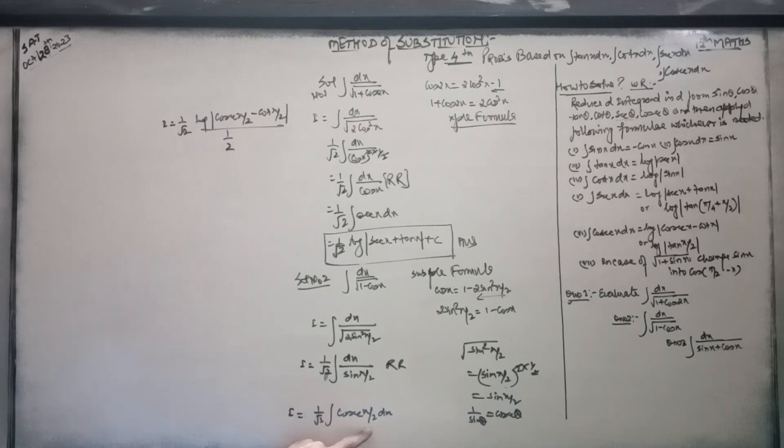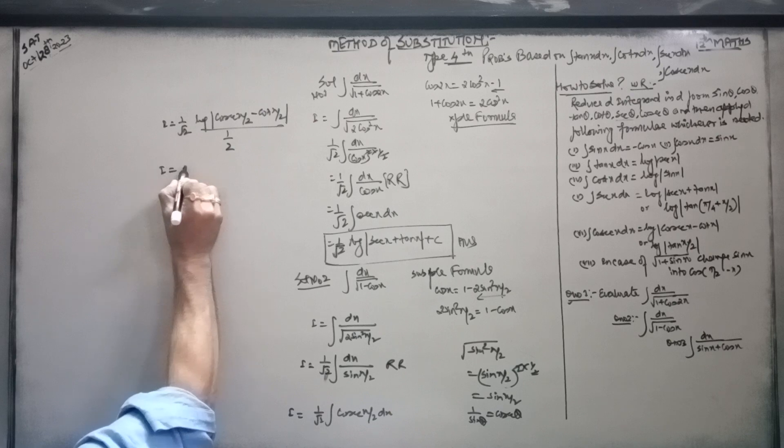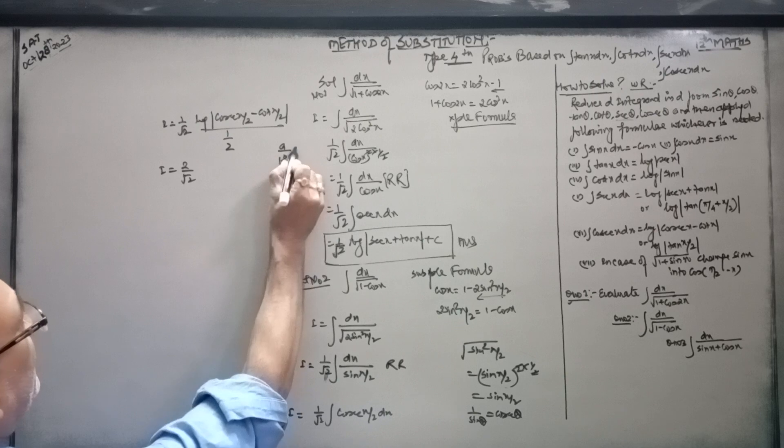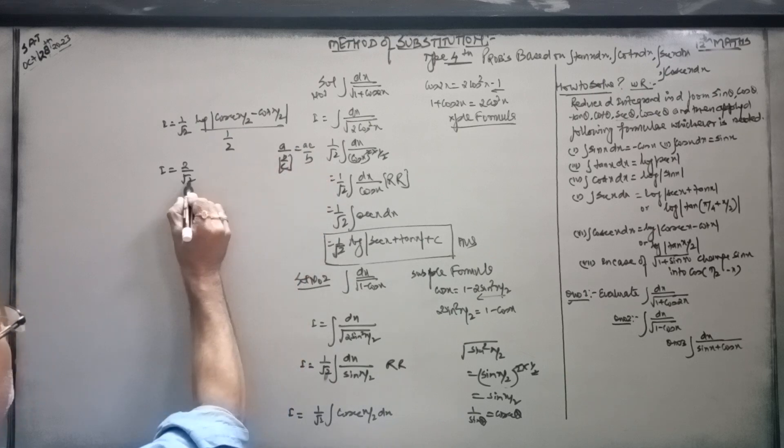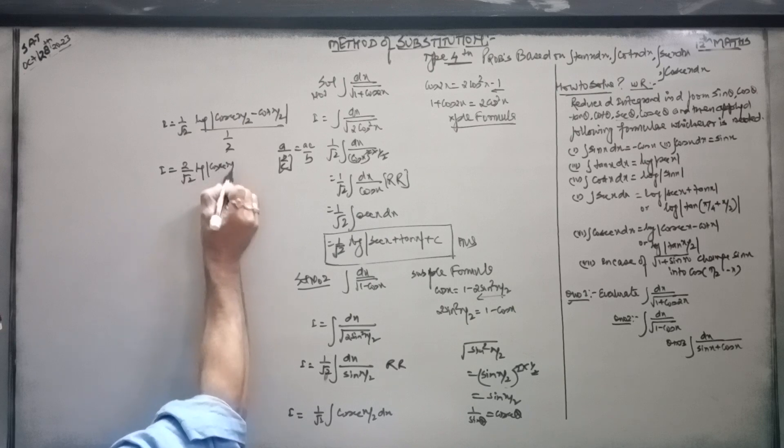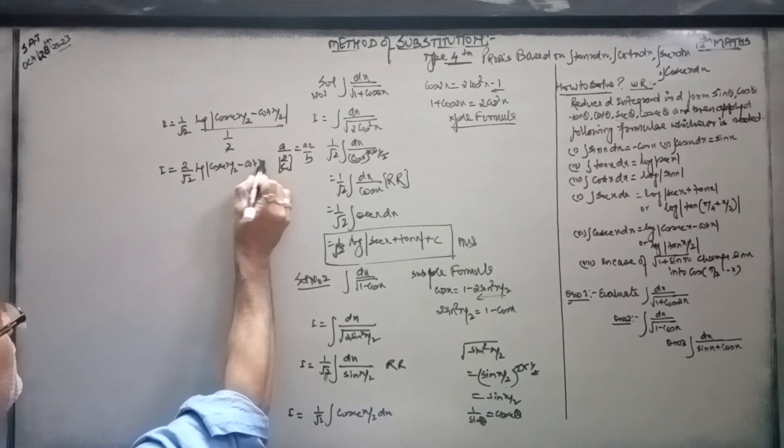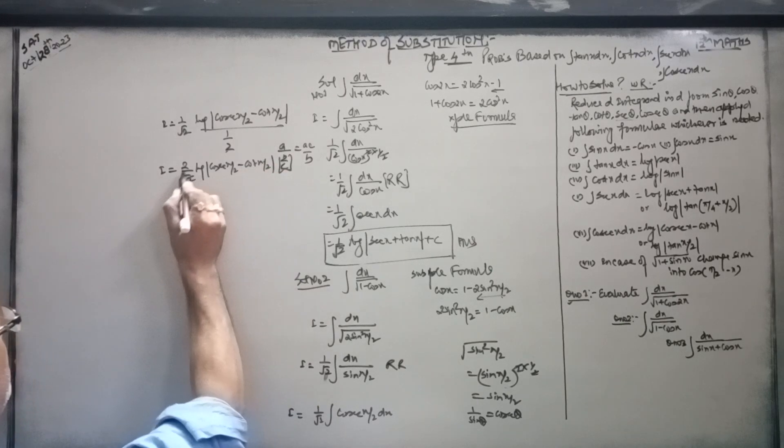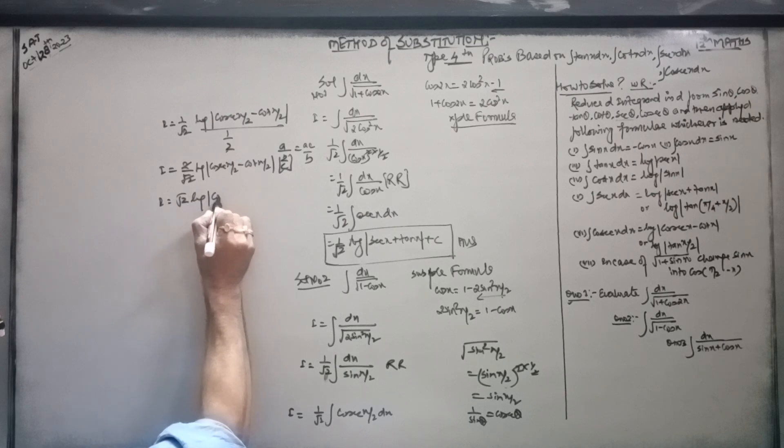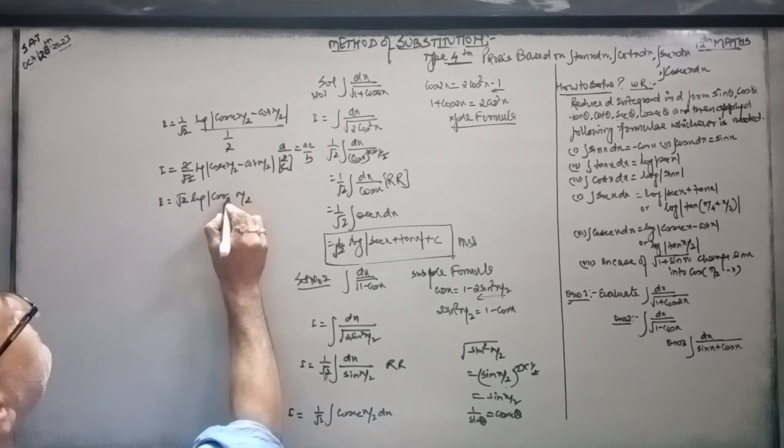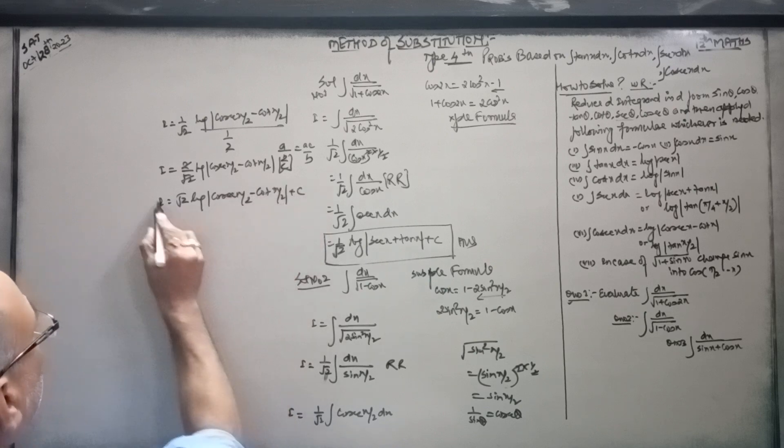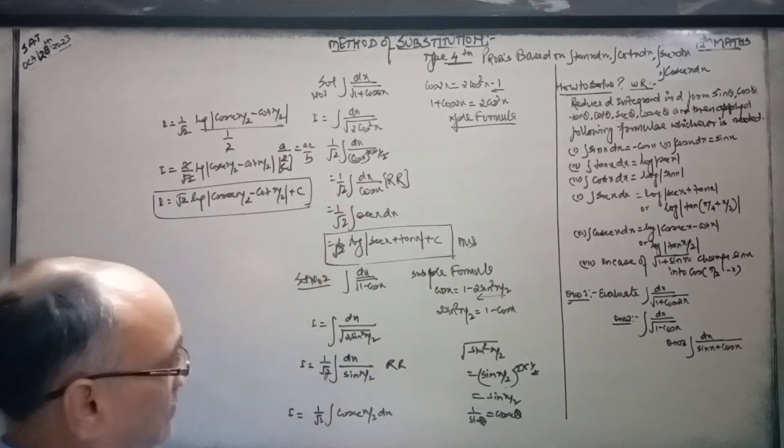Again 1 by 2 is equal to log. Now, i is equal to 2 upon root 2. Because this is cosec x by 2 minus cot x by 2. You can see that one time root 2 time cot x by 2. Or minus equal to log cot x by 2. This was your answer.